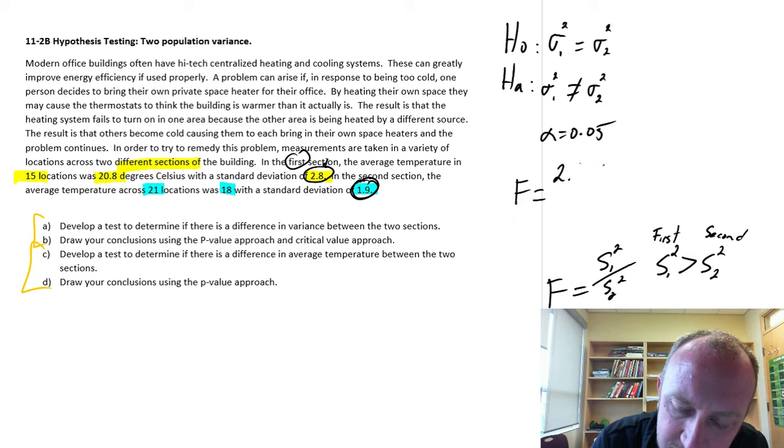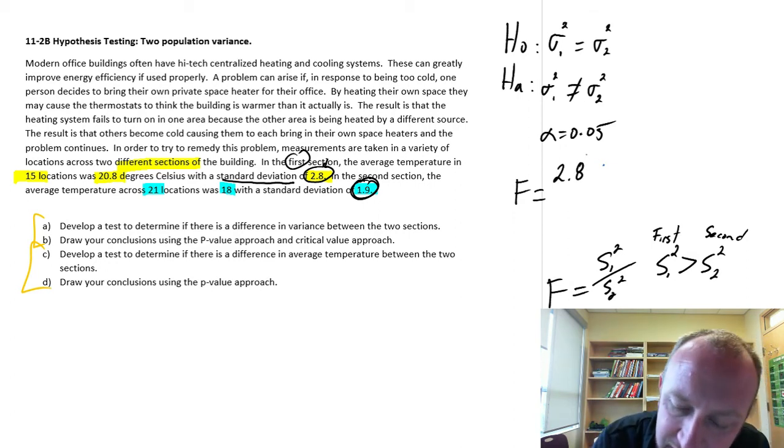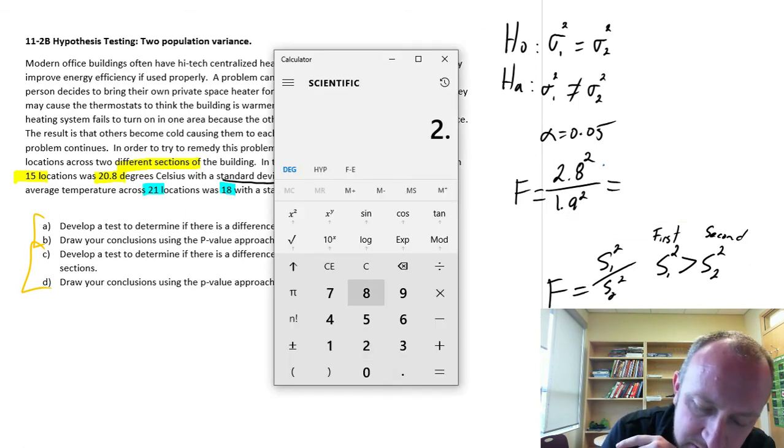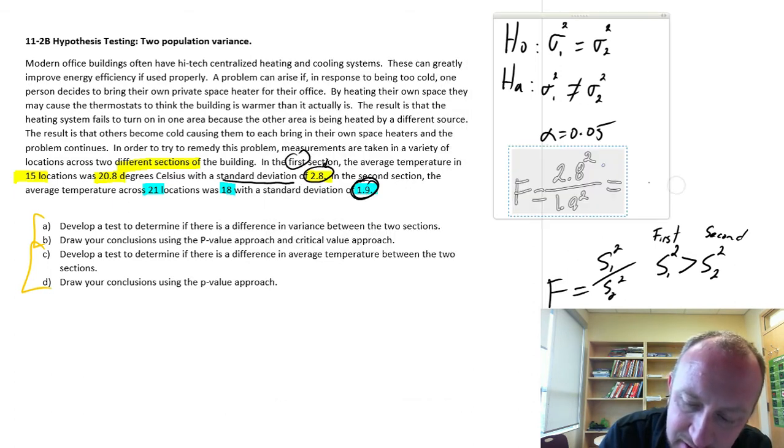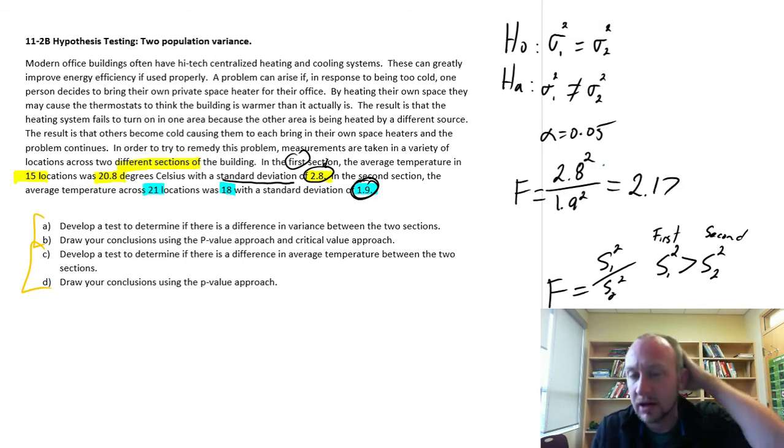So when we calculate our test statistic, this is going to be 2.8, now this is a standard deviation, so that has to be 2.8 squared, divided by 1.9 squared. And so this gives us our value of 2.8 squared divided by 1.9 squared equals 2.17. So we have our test statistic.